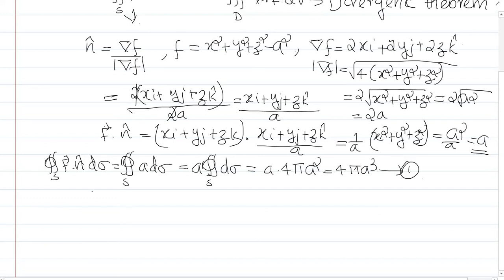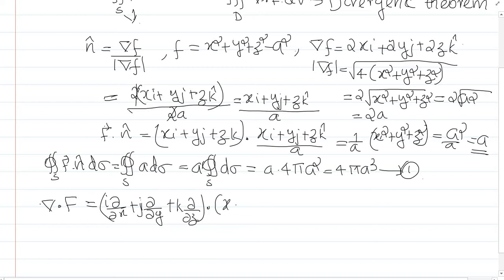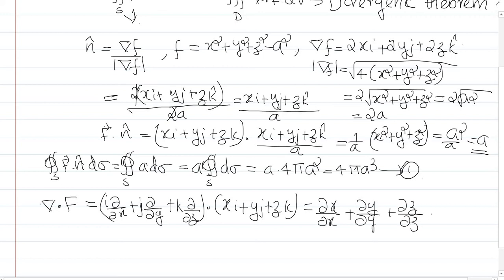Now we find ∇·F. With F = xi + yj + zk, we get ∇·F = ∂x/∂x + ∂y/∂y + ∂z/∂z = 1 + 1 + 1 = 3.